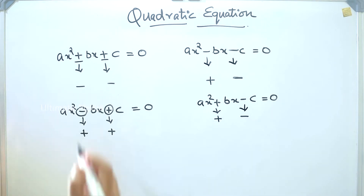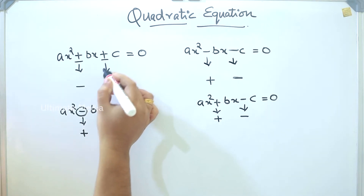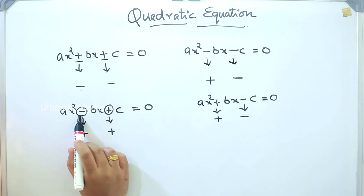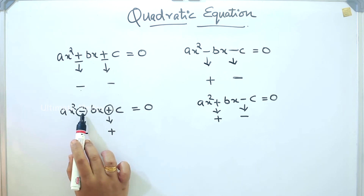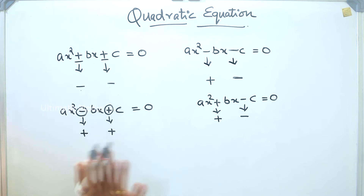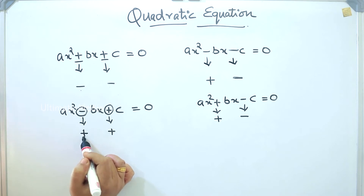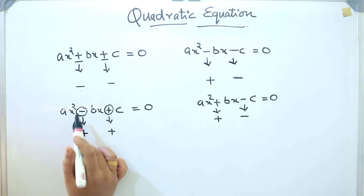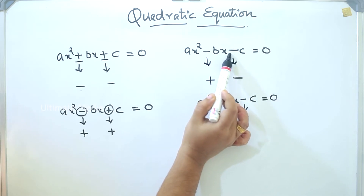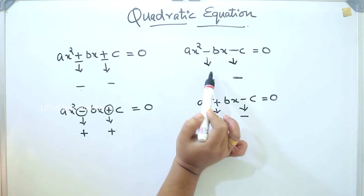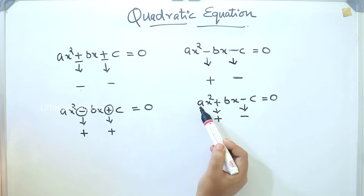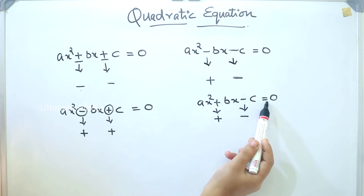Continuing the sign analysis: when the signs are the same, the result is the same. When the sign is positive, it is the same. In this case, we call it the same. But when the opposite sign appears, it is different. In the third case, ax² - bx - c = 0, the opposite sign applies.